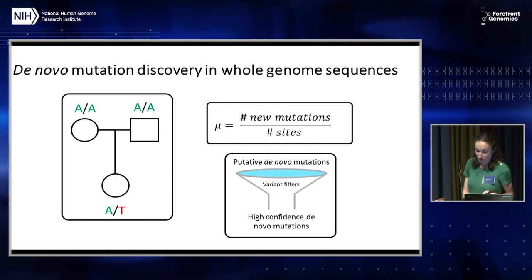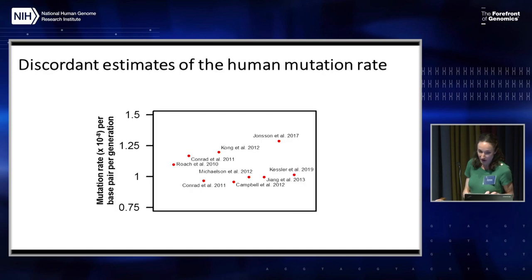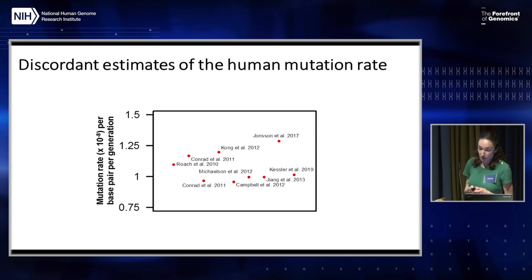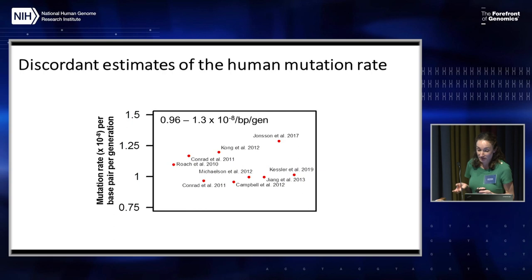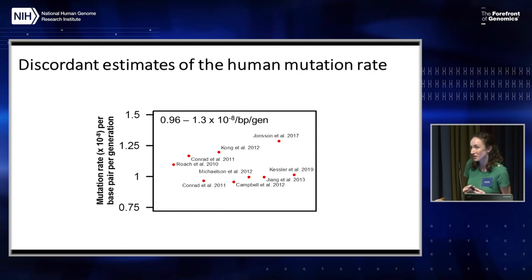Differences in variant filtering pipelines and challenges with alignment can result in differences in the estimated mutation rate from study to study. Estimates of the per-base per-generation mutation rate across a number of recent human studies range from 0.96 to 1.3 times 10 to the minus 8 mutations per base pair per generation. The extent to which this variation reflects bona fide differences in mutation rate between study populations versus noise from differences in study design and data processing is really not clear.